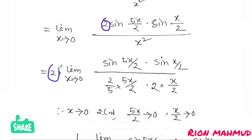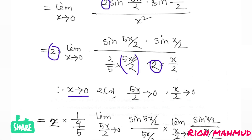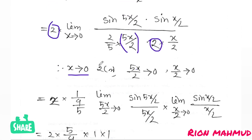Applying the limit as x tends to 0 using sinθ/θ → 1: sin(5x/2) divided by (5x/2) equals 1, and sin(x/2) divided by (x/2) equals 1. So we get 2 times (5/2) times (1/2) equals 2 times 5/4 equals 5/2. The final answer is 5/2.